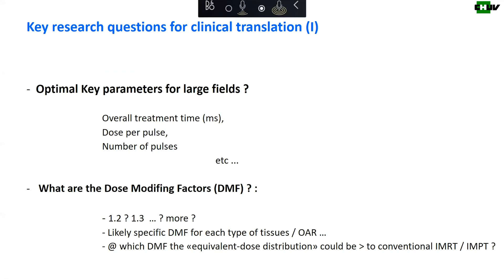Regarding key research questions for clinical translation: we need to know the optimal key parameters for large fields, and whether they will be the same as for small field operations. The key parameters may be dose per pulse, number of pulses, and overall treatment time. We also need to know the dose-modifying factor — whether it's 1.2, 1.3, or slightly more — and it may be specific or different for each type of tissue and organ at risk, which adds a certain level of complexity.